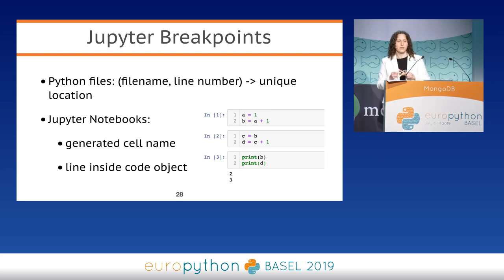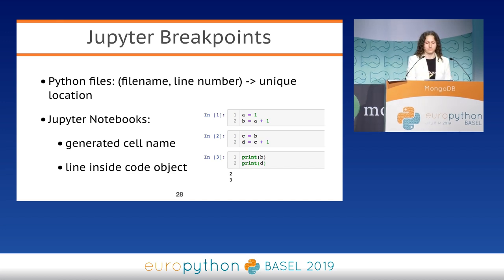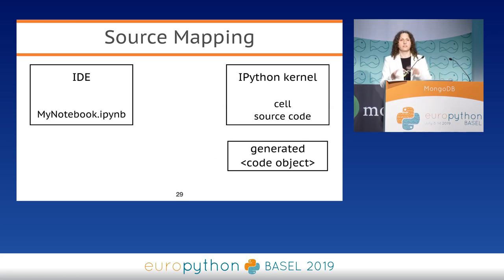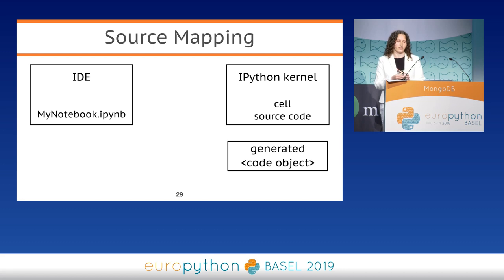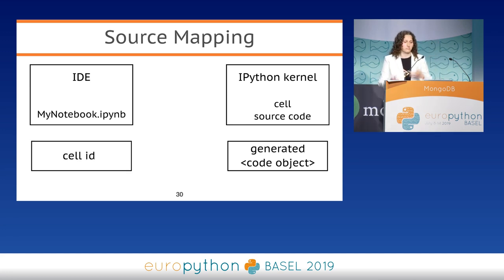But we already know that IPython kernel generates all the necessary information during cell execution. An executed cell has a generated filename and its internal line numbers, so we can use this pair to define a unique location of our code. The problem is that this generated information is available only in IPython kernel and not in our IDE. When the debugger sends a message to the IDE about, for example, a suspension, this message contains the generated filename — but the IDE doesn't know which cell is suspended because it can't find its source code. We need to find a source mapping between the cell identifier in the editor and the generated filename.